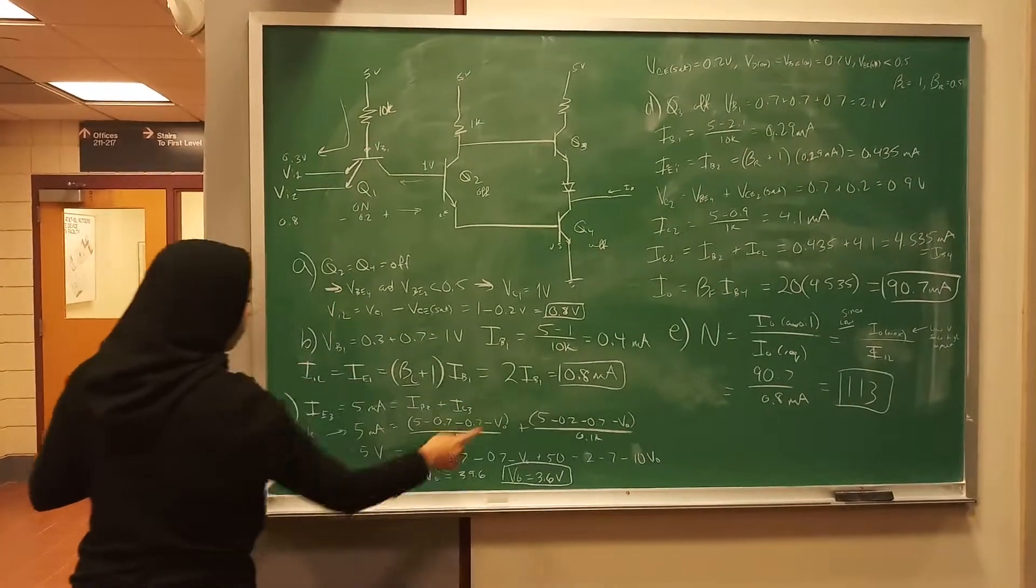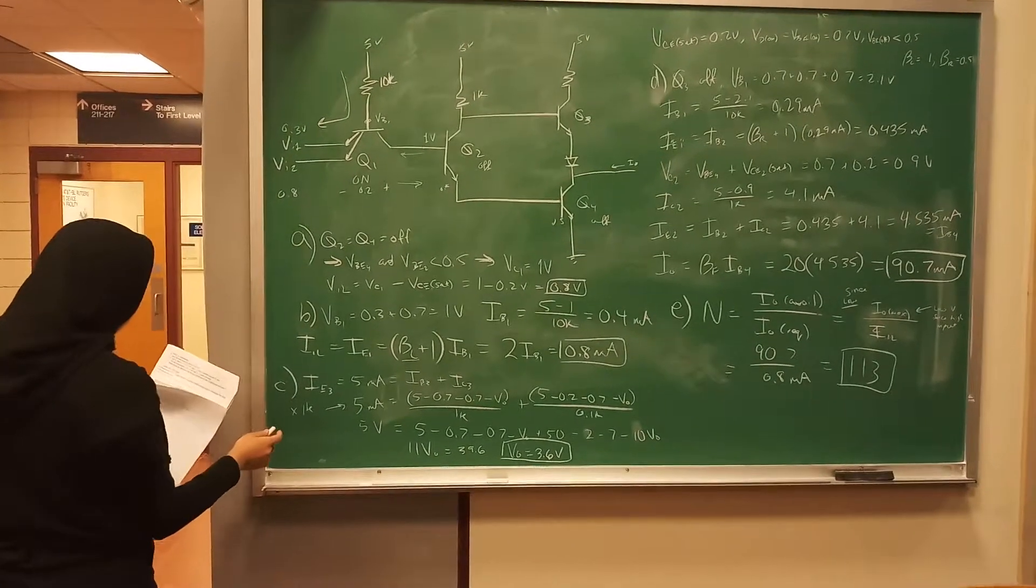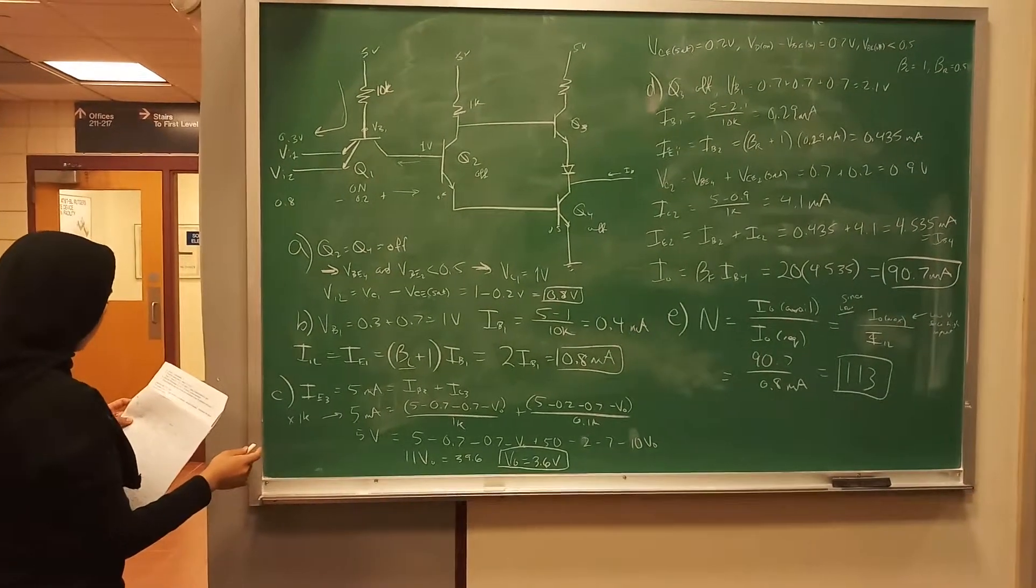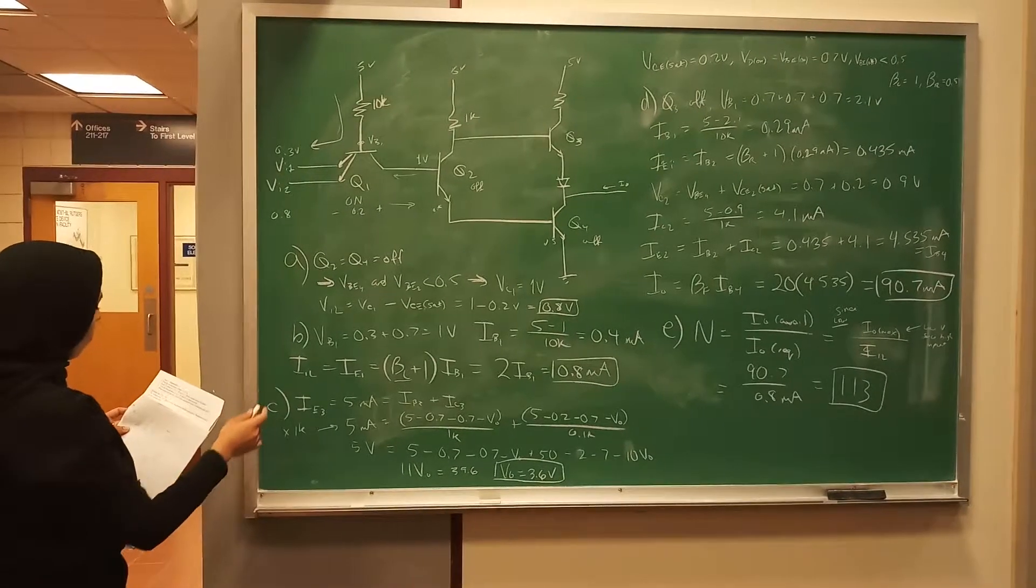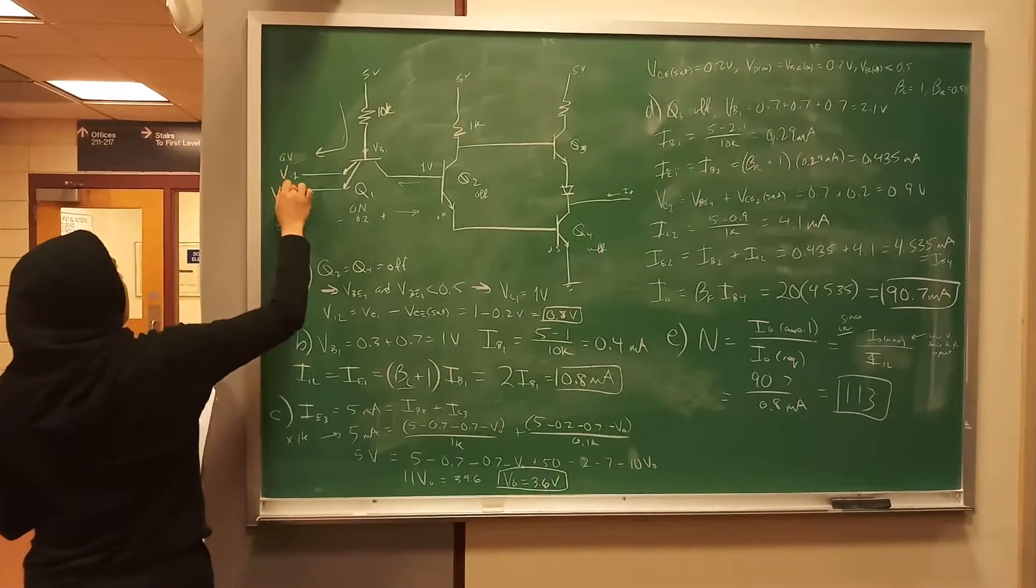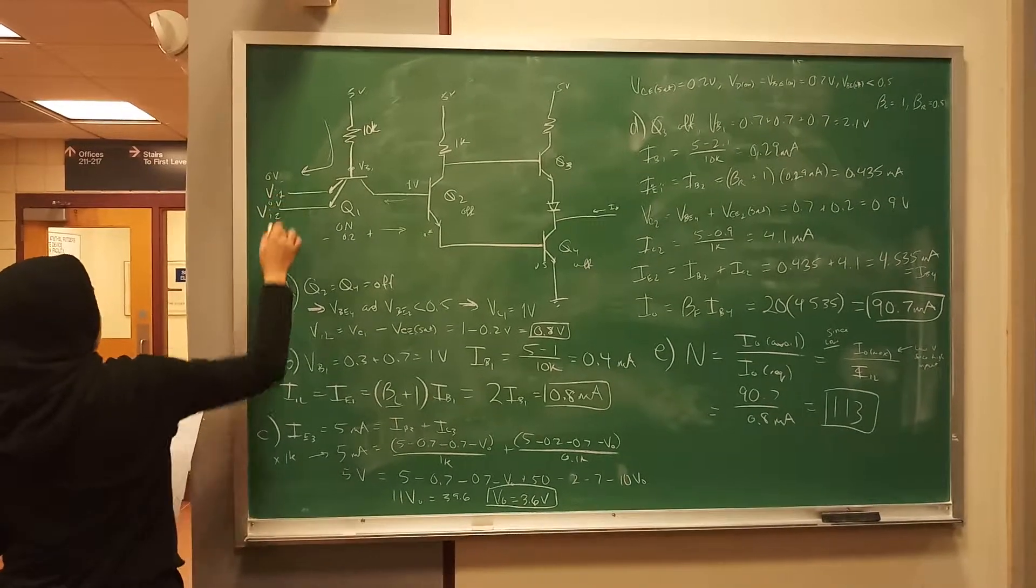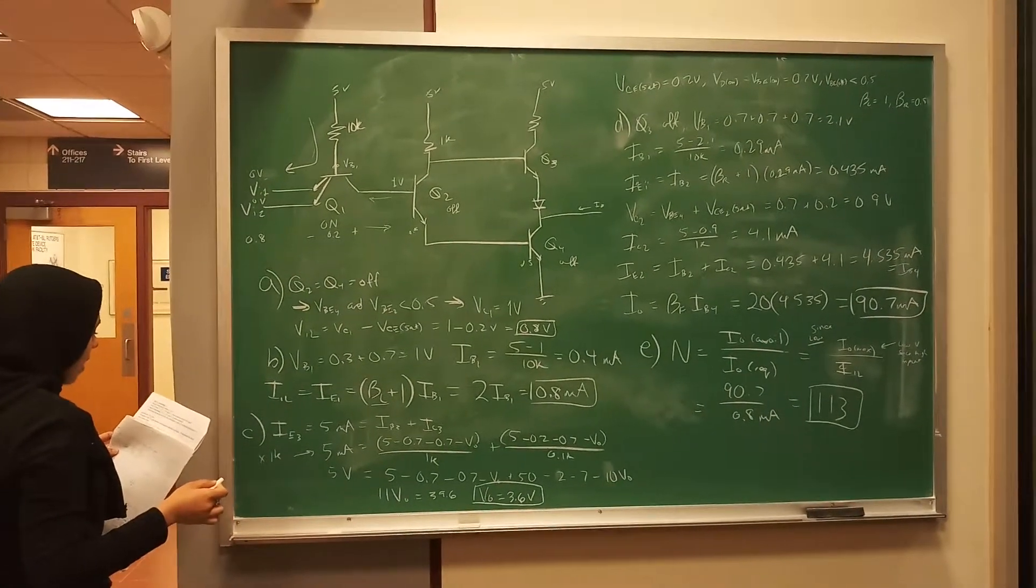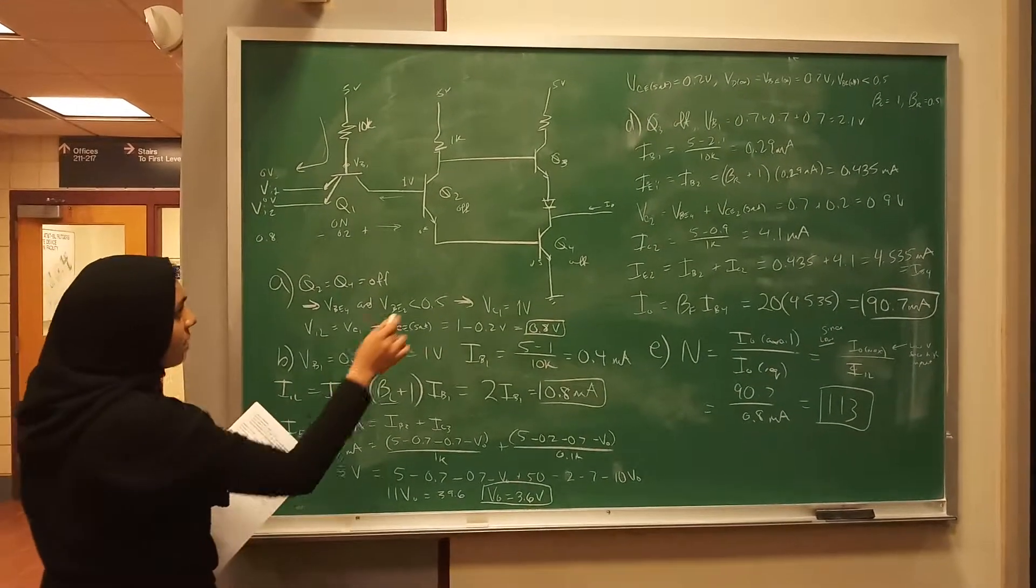And then for Part C, V_output when V_inputs are both low, or actually both 0 volts. And I_out is 5 milliamps.